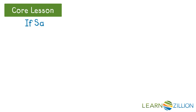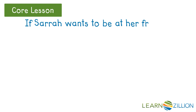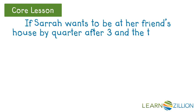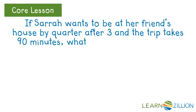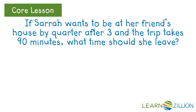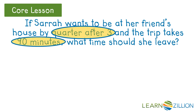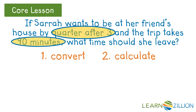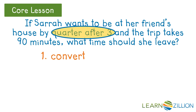Let's solve a problem. If Sarah wants to be at her friend's house by quarter after three and the trip takes 90 minutes, what time should she leave? The first thing we need to do is look for the units of time. We notice the phrase 'quarter after three' and we notice 90 minutes. Since we are trying to determine what time Sarah needs to leave, let's convert — quarter after three really means 3:15.